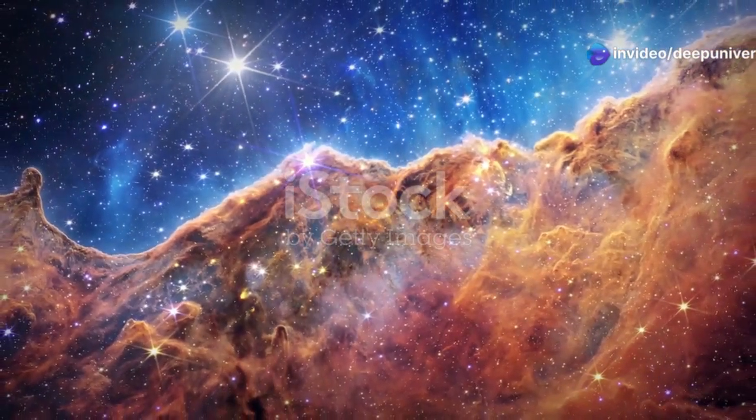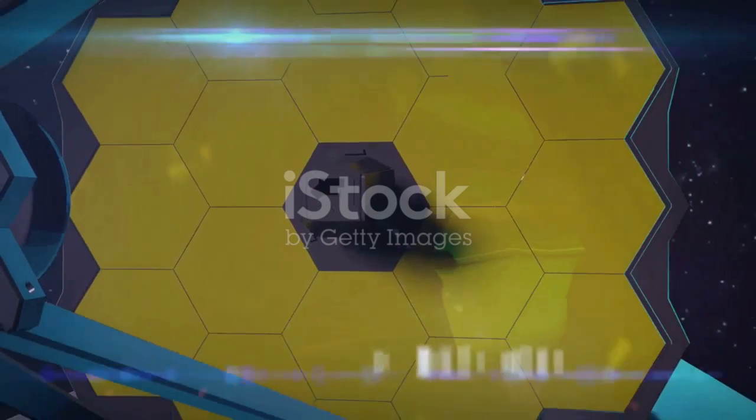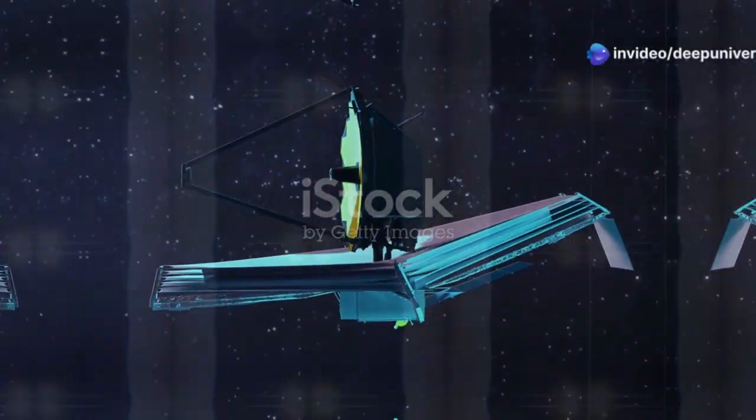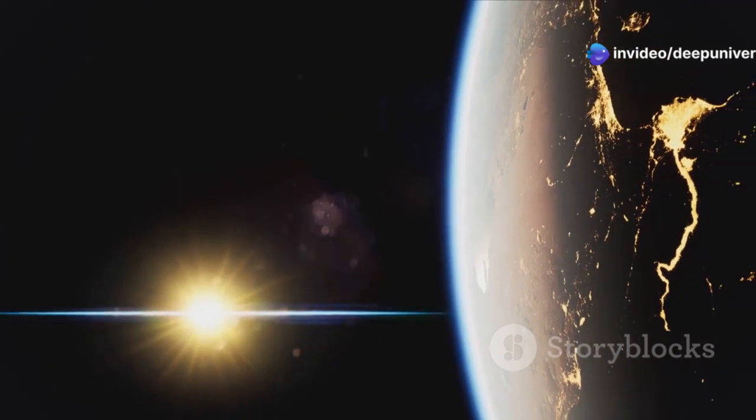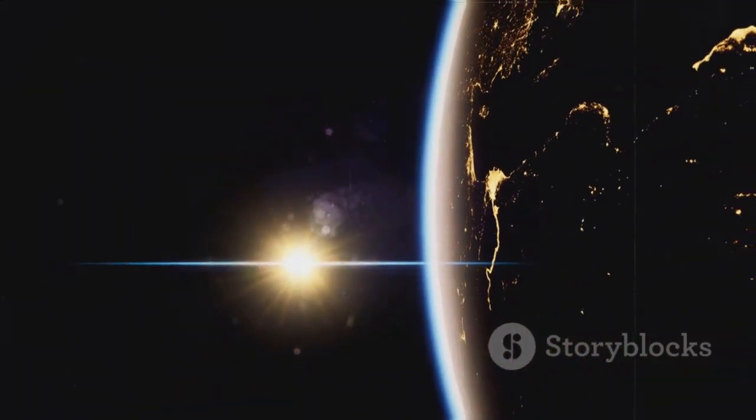When we look at distant objects, we're seeing them as they were in the past. The light from these objects has traveled vast distances across the cosmos to reach our eyes or telescopes. For example, light from the sun takes about 8 minutes to reach Earth. This means that the sunlight we see is actually 8 minutes old.